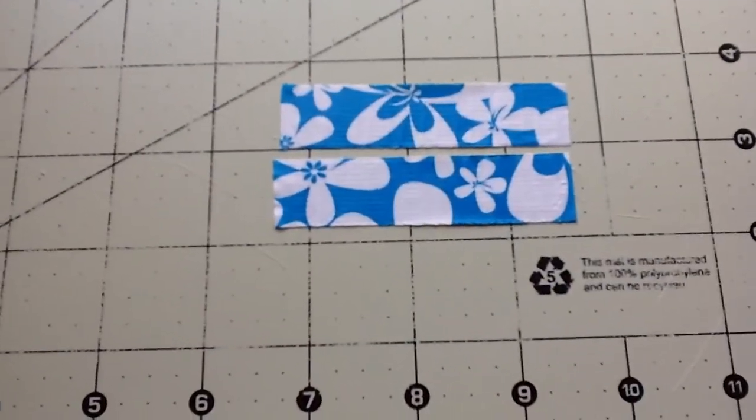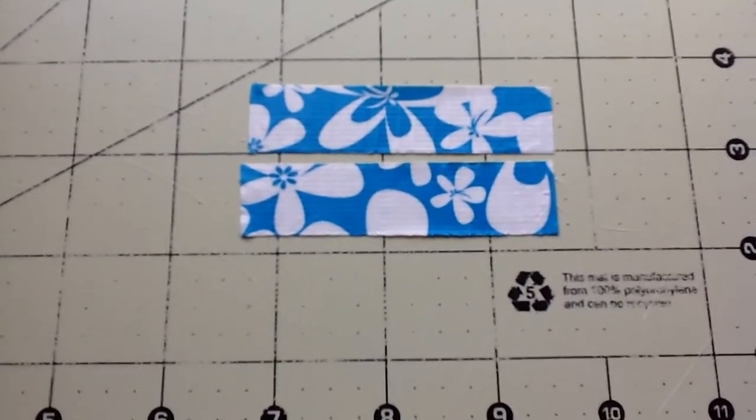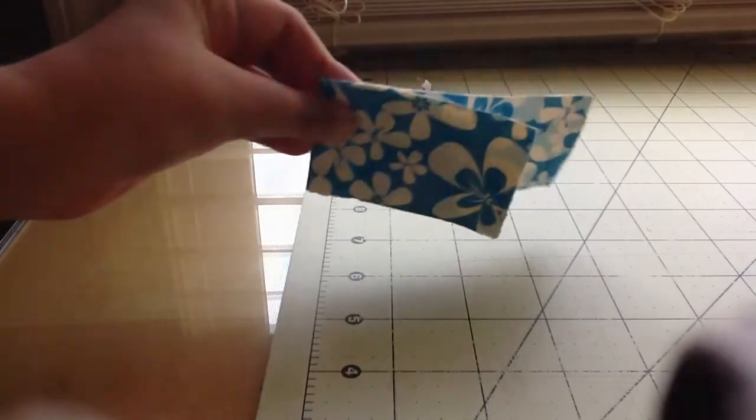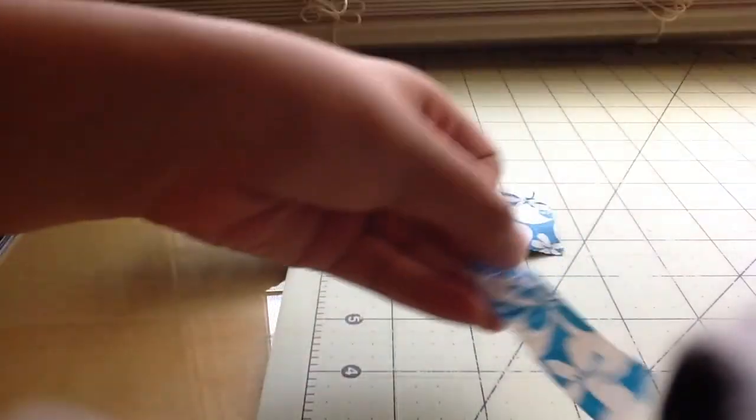Cut two pieces of tape that are three and three fourths inches tall by two and three fourths inches. Fold it over and take your strip of tape.